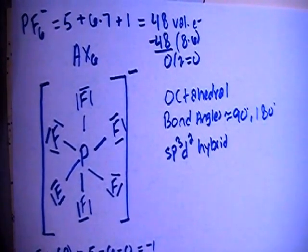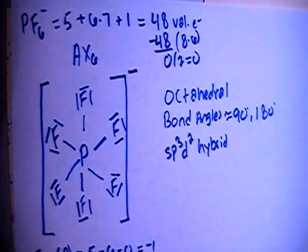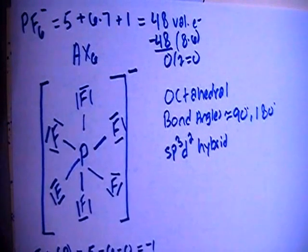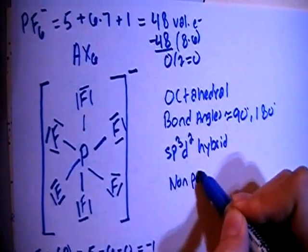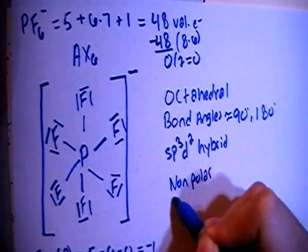And in terms of polarity, because all of the surrounding atoms are the same kind of atom, they're all fluorines, all of their dipole moments will cancel out, making this a non-polar compound or ion.